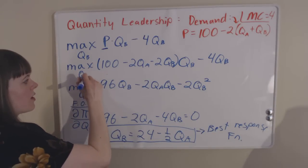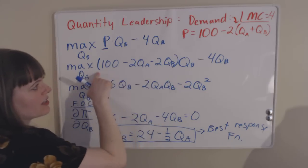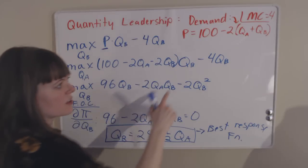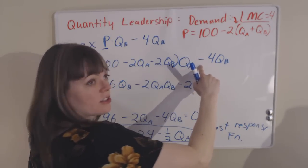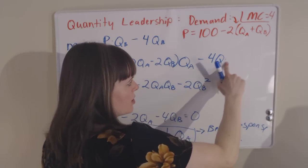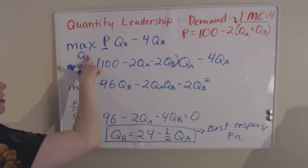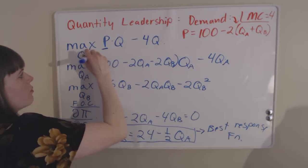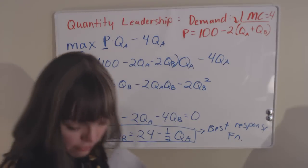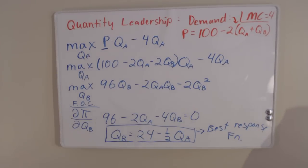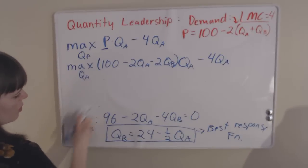Firm A will choose their quantity, quantity A, by maximizing the industry price, which is the same as it was before, it's just our demand function, times the quantity that firm A chooses, minus the total costs, which are $4 per unit, times the quantity that firm A chooses to produce. We've now switched, just by switching the subscripts, we've switched this into firm A's problem, and we need to move forth and solve it.